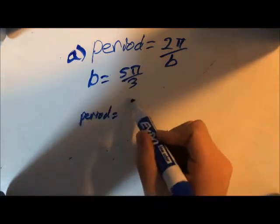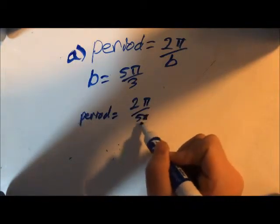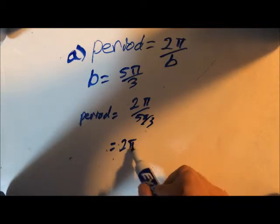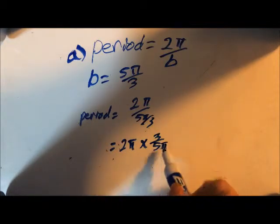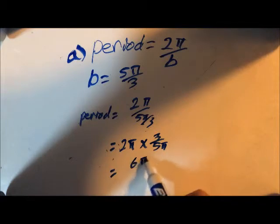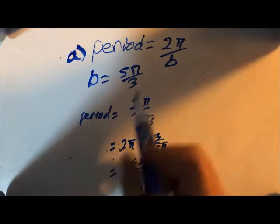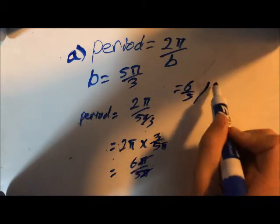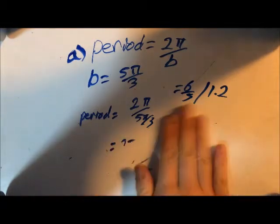Since we are dividing 2 pi by a fraction, we must flip the fraction and multiply. Therefore, we are multiplying 2 pi by 3 over 5 pi. This results in 6 pi over 5 pi. The pi is cancelled out, leaving us with 6 over 5, or 1.2.